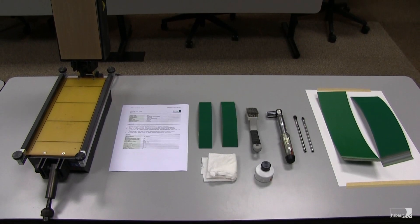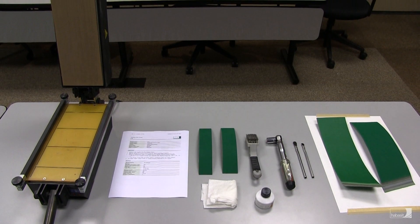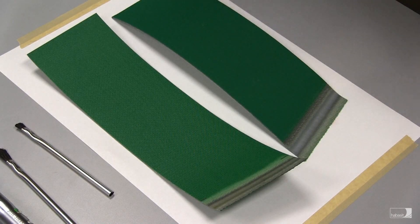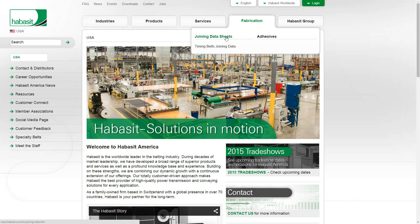We're going to join an F2 belt with a Thermafix joint, that's a skived overlap splice. You can refer to the joining data sheet on our website.